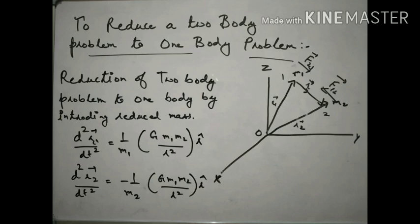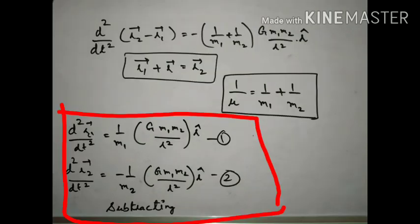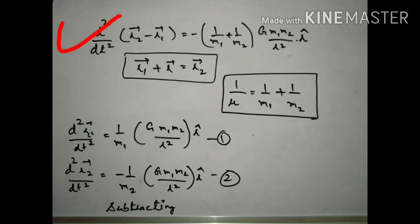M1 is in the denominator. Similarly for the second equation of motion, we do the same step. In the next step, we subtract both equations. After subtracting, we get d²r/dt² = −(1/m1 + 1/m2)·G·m1·m2/r²·r-cap. According to the triangle law of vector addition, r1 + r = r2. Now we introduce the reduced mass indicated by mu: 1/mu = 1/m1 + 1/m2.